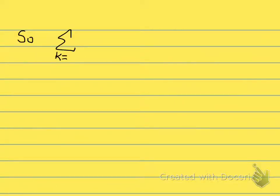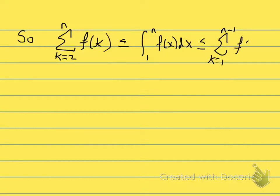So we have the lower sum, it's going to be less than the actual area, and the actual area is going to be less than or equal to the upper sum. And we're going to note that sₙ is equal to f(1) plus f(2) plus all the way to f(n).